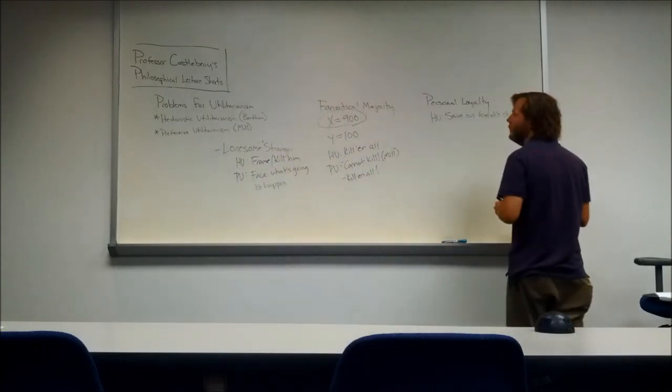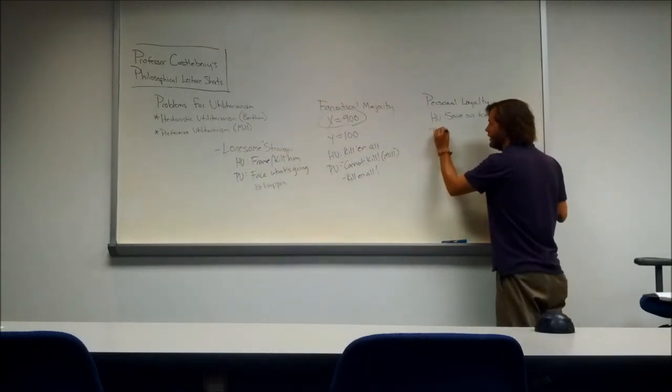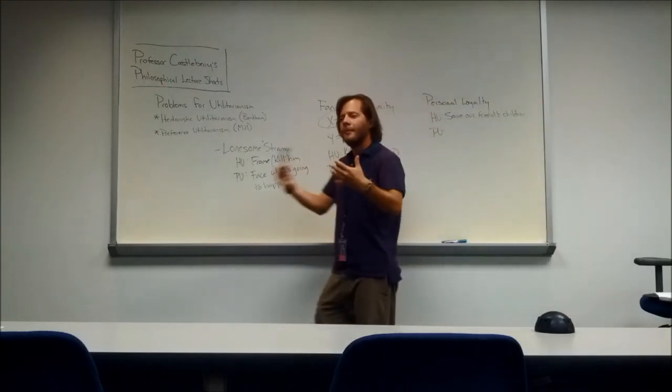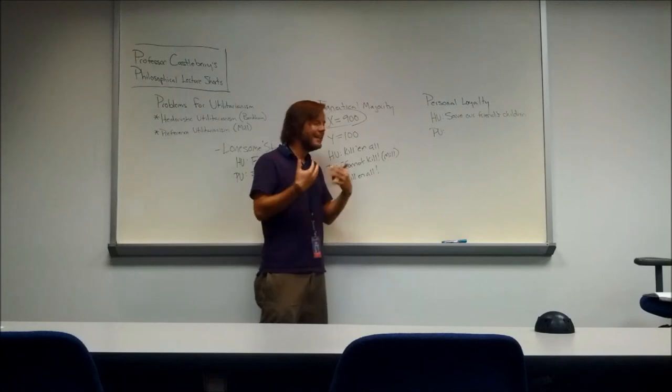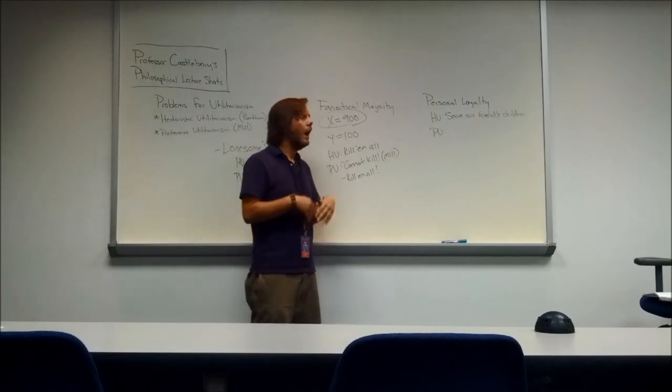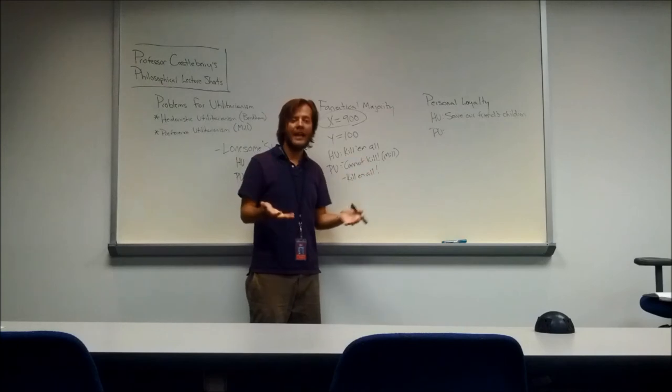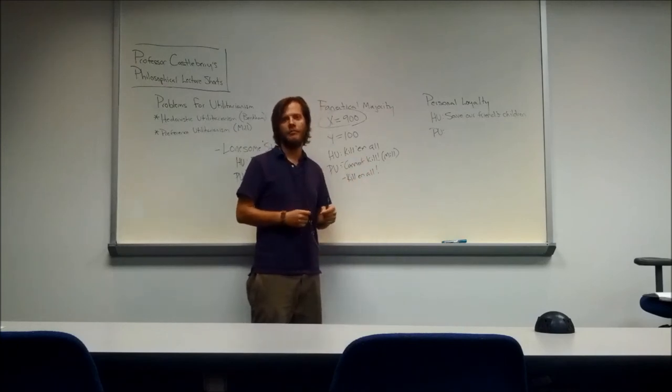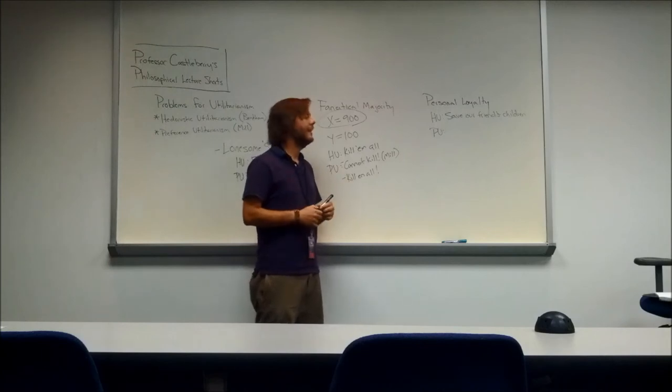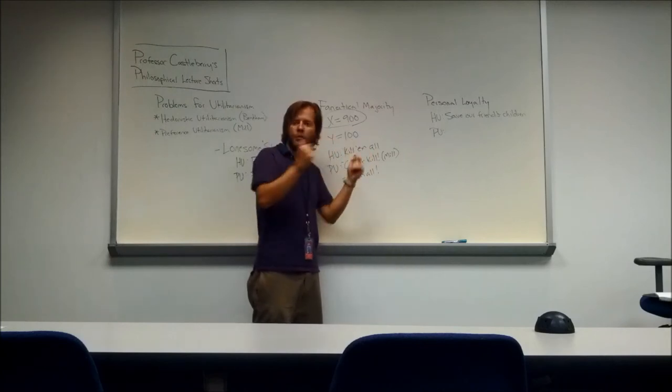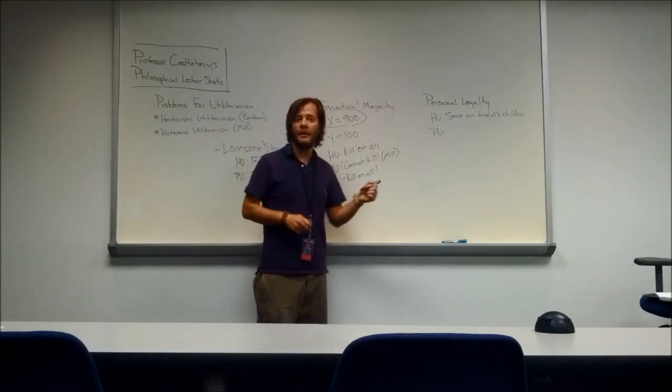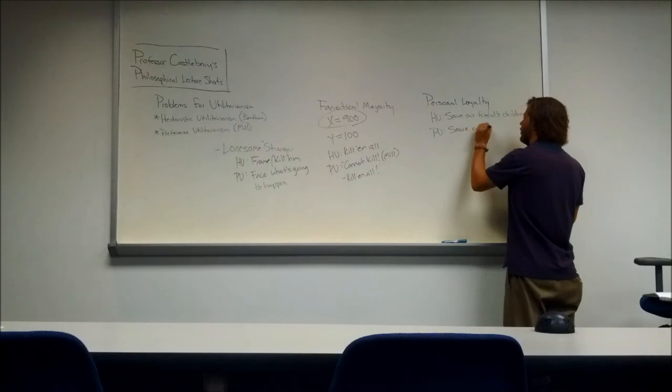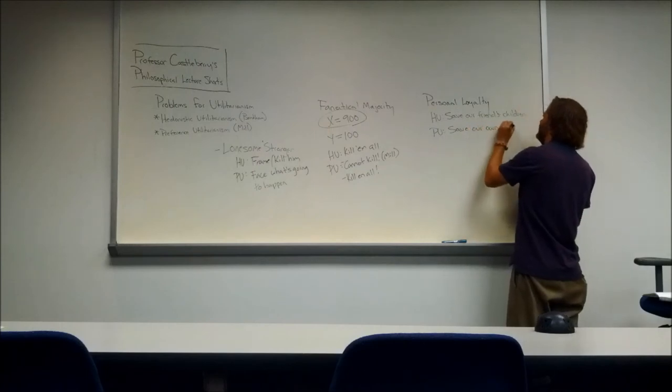But now let's look at what maybe preference utilitarianism, what Mill might say. Now we have to say what is the general idea that brings about the greatest amount of pleasure. And I think in this case, we might have a save. As a society, we may all understand that it's your own son and that any of us in that same situation would save our own son. They definitely would. And so it's as an overall we understand that that's what we should do. And maybe we save them here. So maybe according to preference, maybe we do save our own child. Our own child, right? And that's how most agree.